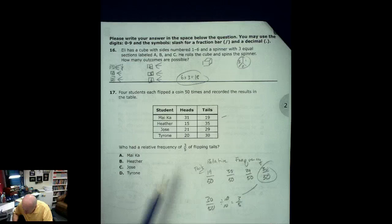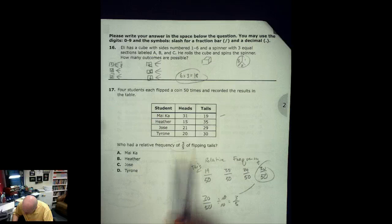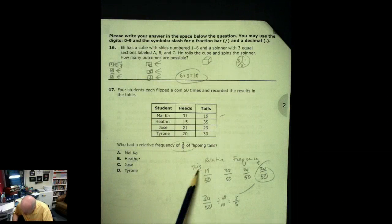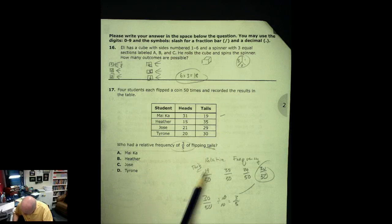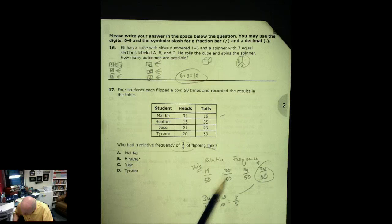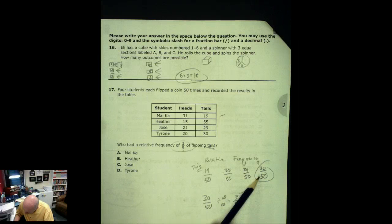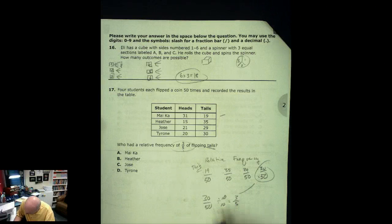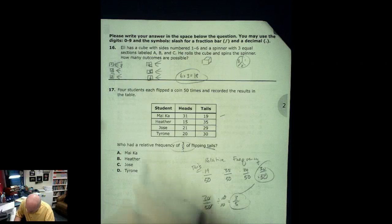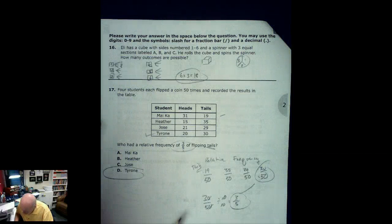Here's the question on relative frequency. We know that the relative frequency of somebody is going to be 3 fifths so I just started looking at all the tails. Well this kid had 19 tails out of 50. This kid had 35 tails out of 50. This one had 29 out of 50 and this one had 30 out of 50. This looked the closest to 3 fifths. So if I divided both of those guys by 10 by chopping off that zero I get 3 fifths. And of course that is Tyrone here at D.